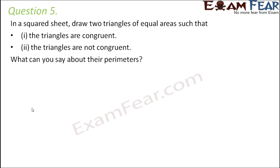What can you say about their perimeters? Now, it is not necessary that if two triangles have equal areas they will always be congruent. They can be congruent, but it is not necessary that they will be congruent.